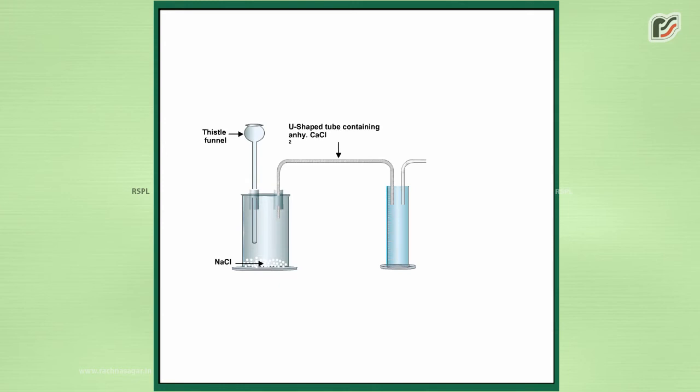Take 10 grams of NaCl in a conical flask and set the apparatus as shown in the diagram.